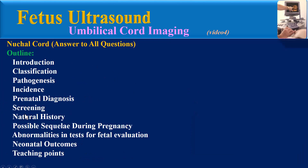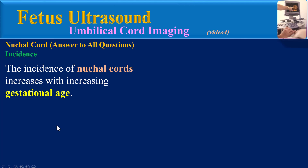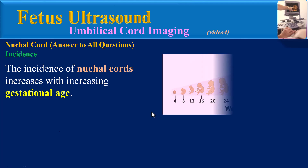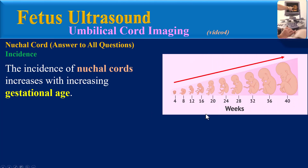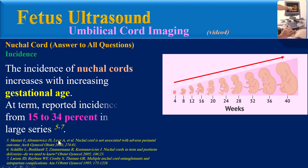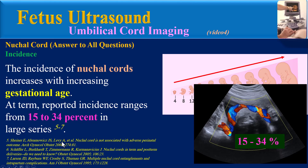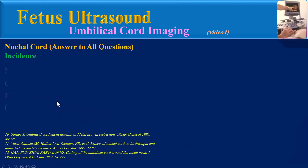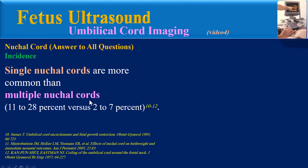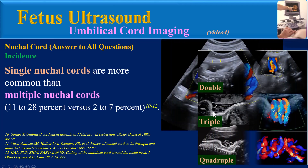Incidence: The incidence of nuchal cords increases with increasing gestational age. At term, the reported incidence ranges from 15 to 34 percent in large series. Single nuchal cords are more common than multiple nuchal cords.